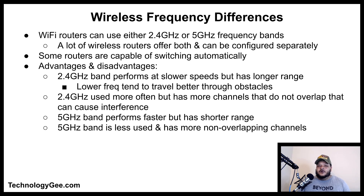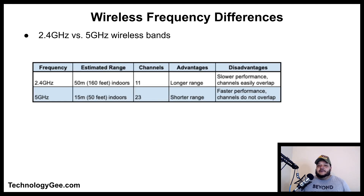The 2.4 GHz band performs at slower speeds but has a longer range. Lower frequencies tend to travel better through obstacles such as walls and doors. The 2.4 GHz band is used more often but has more overlapping channels that can cause interference. The 5 GHz band performs at faster rates but typically has a shorter range and has more non-overlapping channels, which minimizes interference.